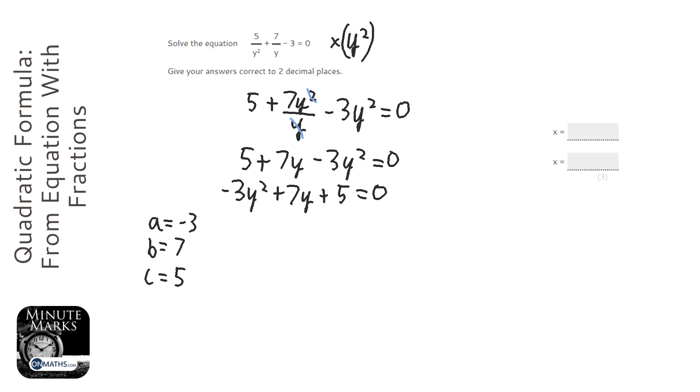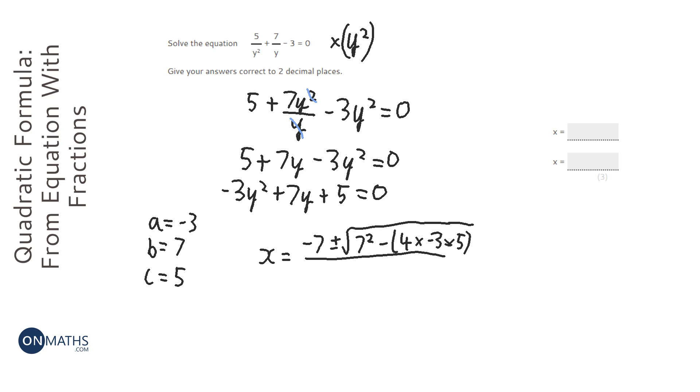Then we're going to use the quadratic formula, which is x equals minus b plus or minus square root of b squared minus 4ac, all over 2a.